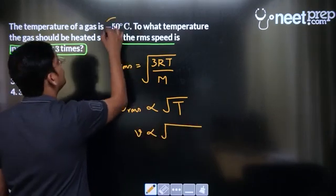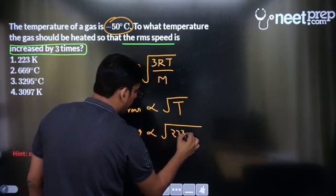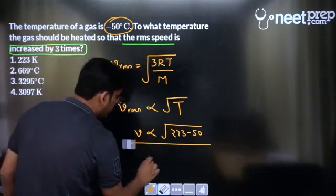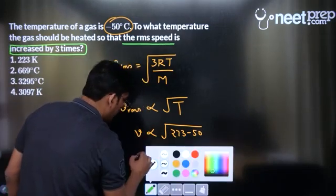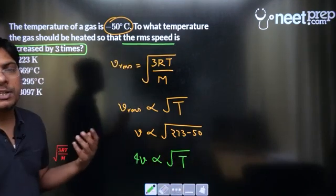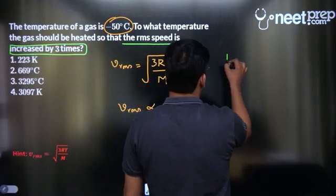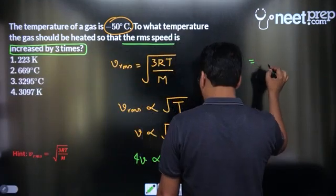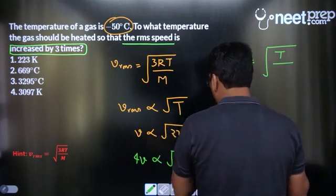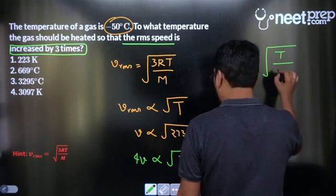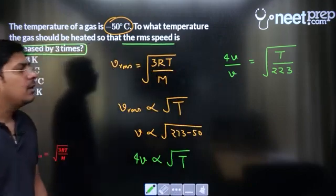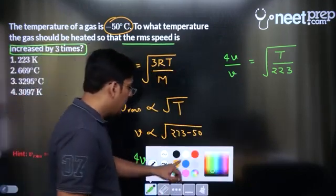So initial rms speed was v and the value of temperature was minus 50 degrees celsius, that means 273 minus 50. The new rms speed is increased by 3 times, that means the new rms speed becomes 4 times of the initial one, is directly proportional to square root of temperature in kelvin. So 4v divided by v would be under root of capital T divided by 273 minus 50, would be 223.